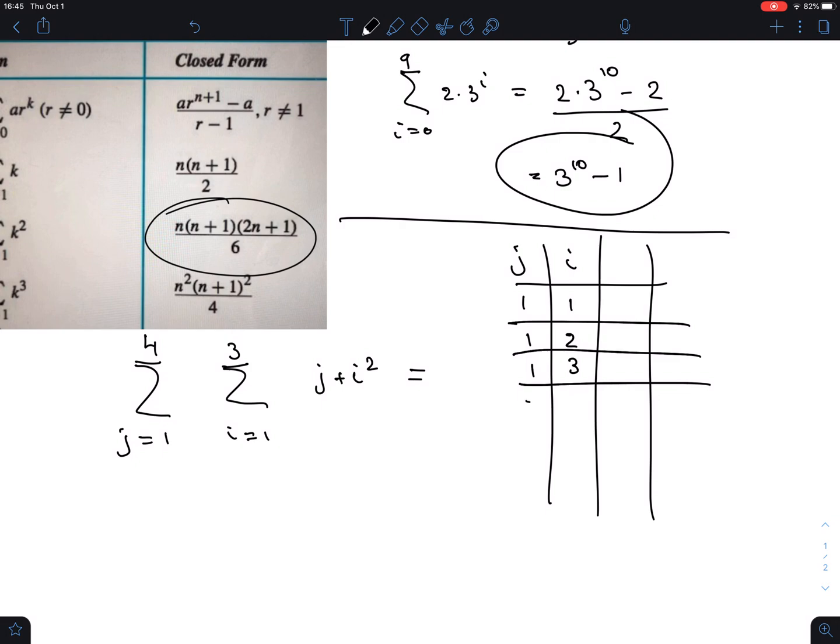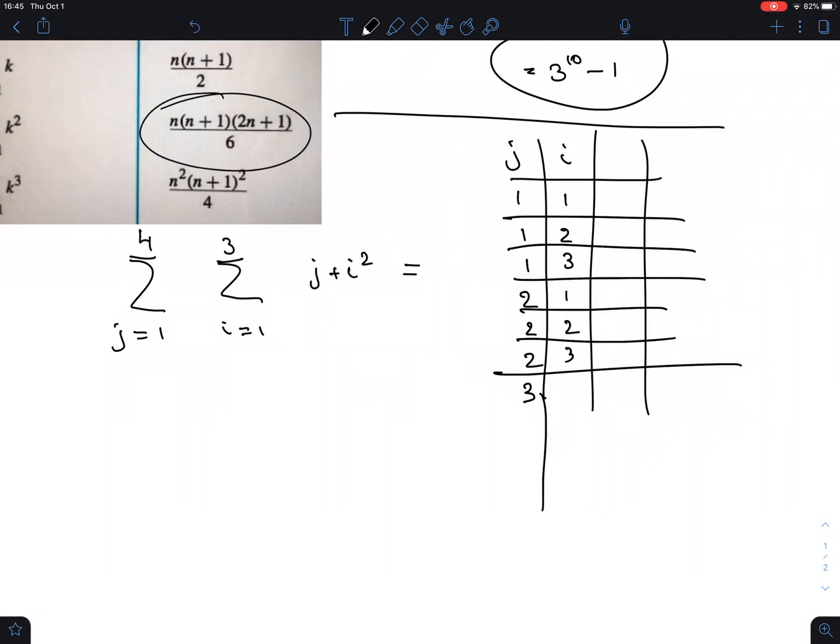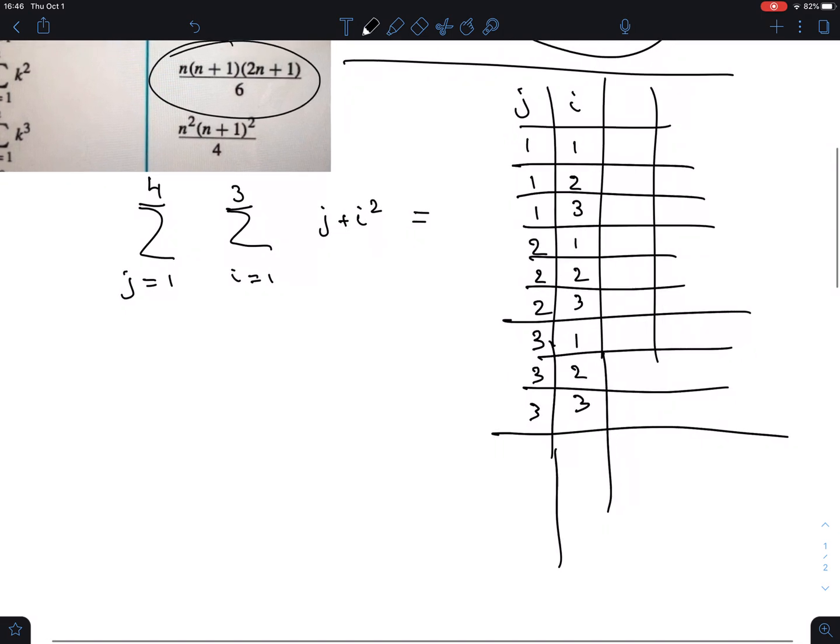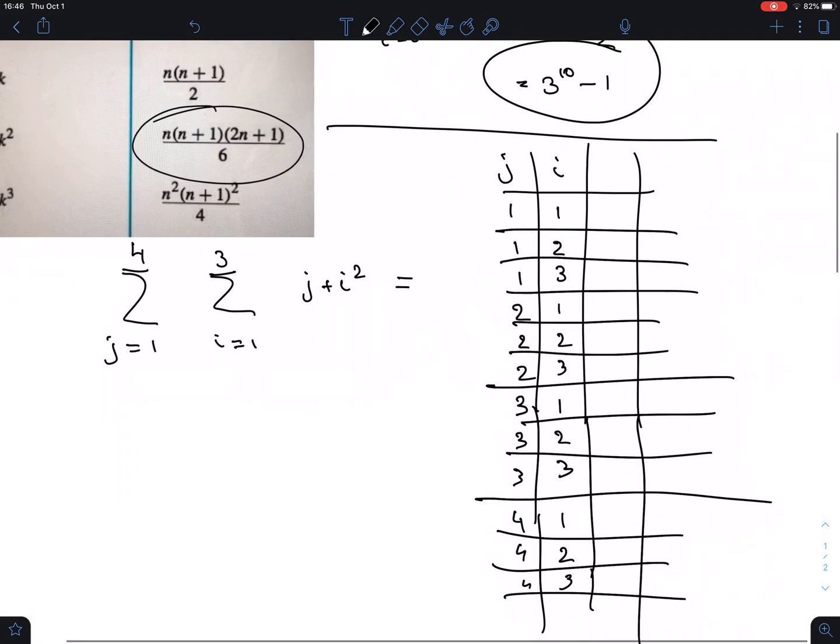Then we do the same with 3 here: 1, 2, 3. And then finally, we do it with 4. That's 1, 2, and 3. We do this so that we have the numbers ready to calculate this expression that we have to sum up. In other words, for this j and this i, going through these columns row by row, we calculate this expression.